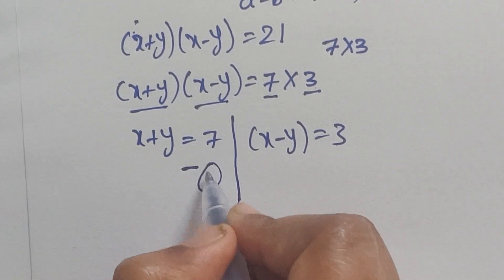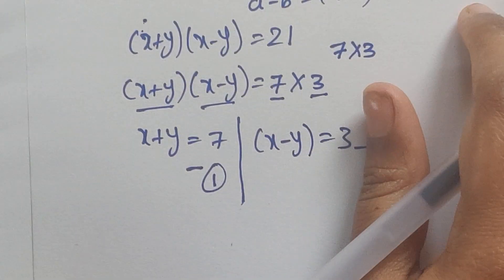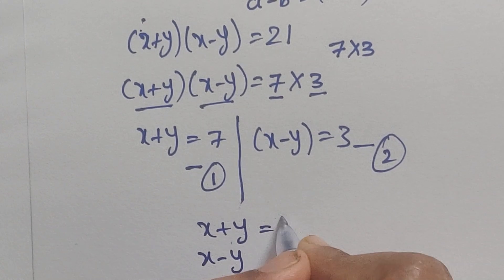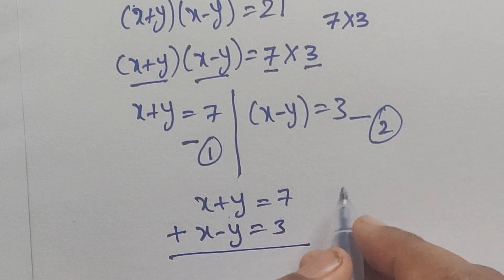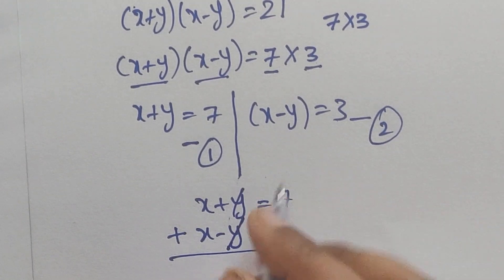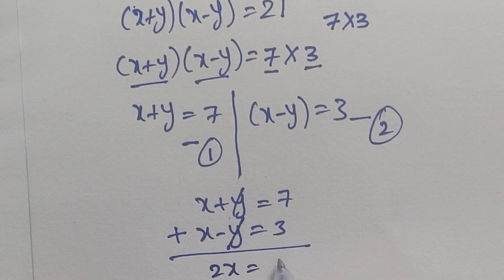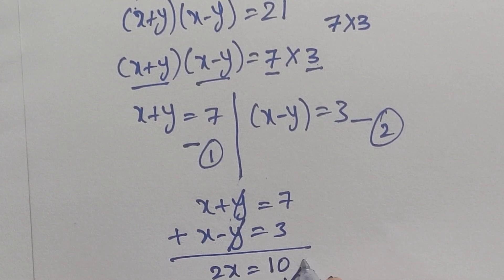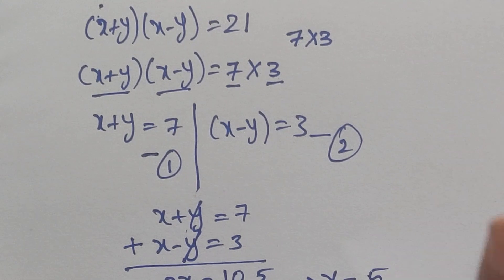Let this be equation 1 and equation 2. Now add these two equations. x plus y plus x minus y equals 7 plus 3. The y terms cancel, so 2x equals 10, which gives x equals 5.